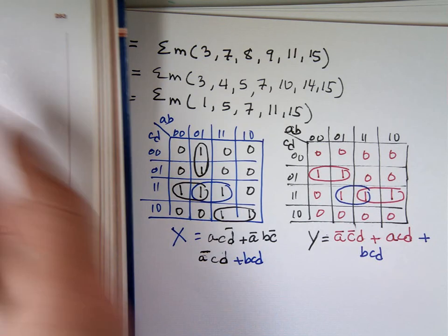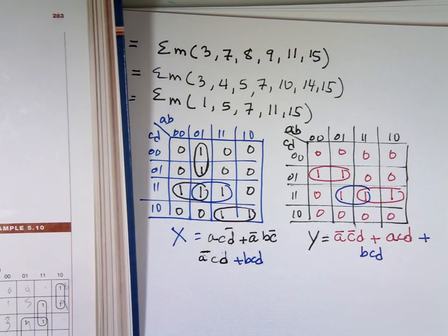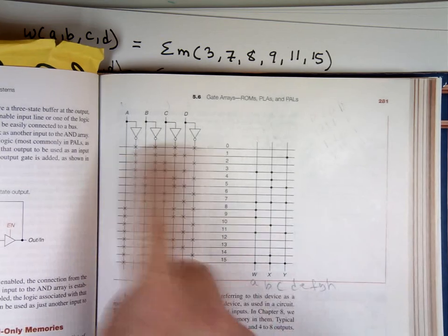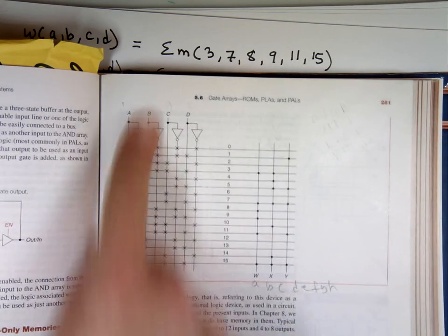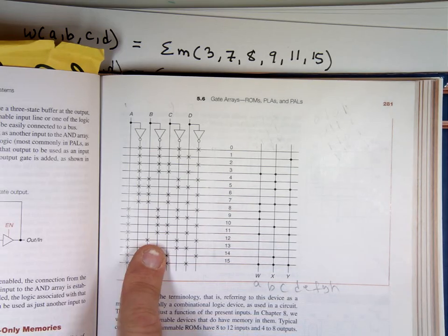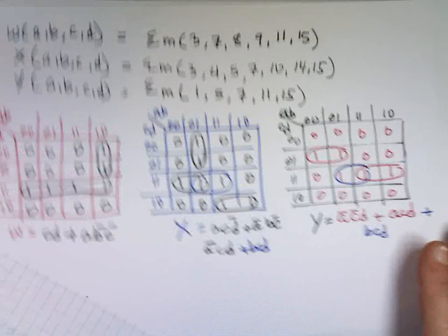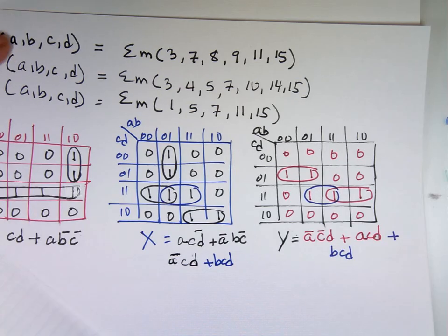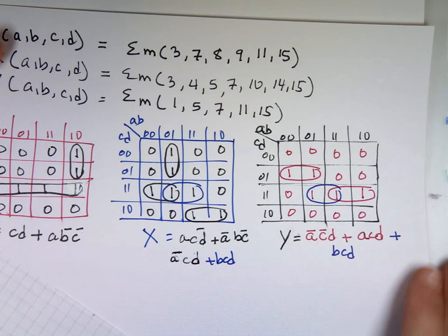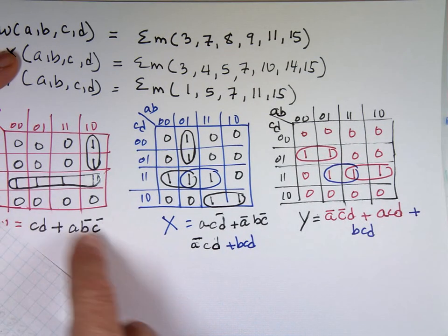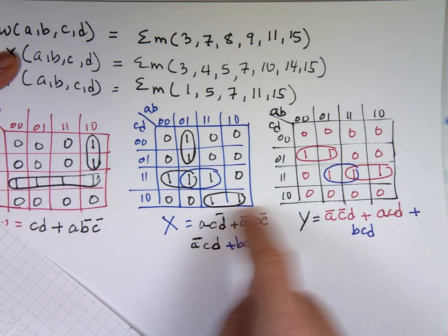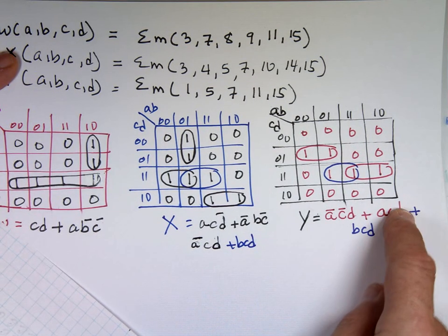When I go to design this, instead of listing all 16 combinations like with a ROM, I'm going to list only what the functions are. I can see I'm going to need eight AND gates — one, two, three, four, five, six, seven, eight.